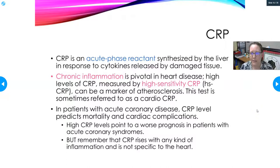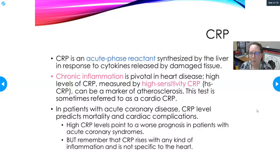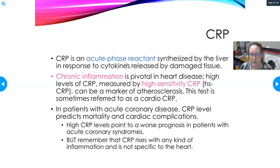CRP is another useful test, but not for a patient actively having a heart attack. The idea is that we don't want to wait until patients are having heart attacks to discuss heart health. We want ways to detect atherosclerosis before a heart attack occurs. CRP is an acute phase reactant synthesized by the liver in response to cytokines released by damaged tissue — it's a marker of inflammation, but it's very non-specific.